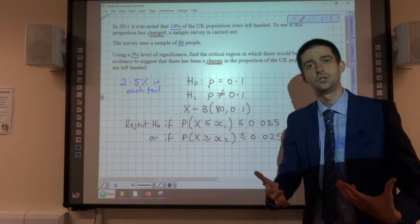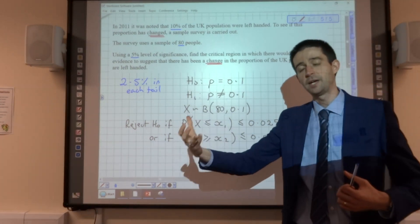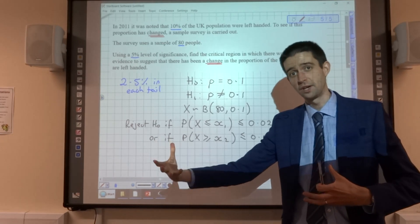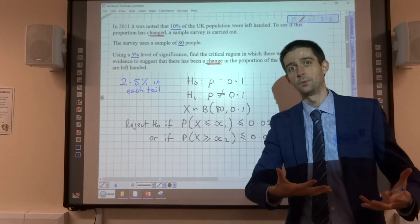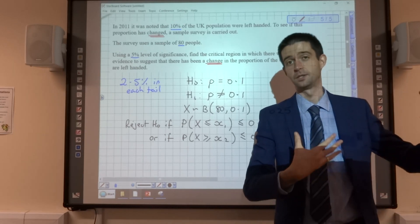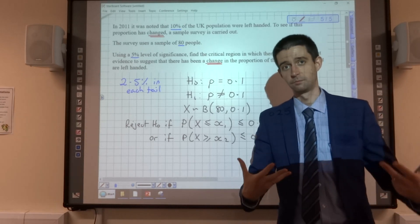So because this is a two-tailed test, we're asking how many people would there have to be that are left-handed that's a small enough number that makes us doubt the probability, or how many people would there have to be that were left-handed that's a big enough number that makes us doubt our assumed probability.